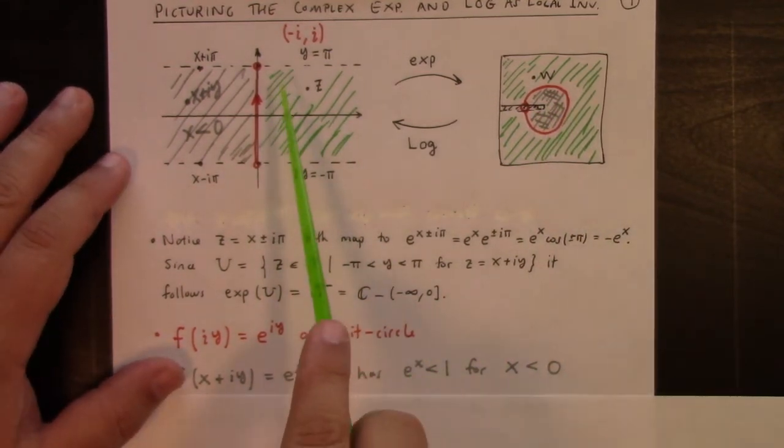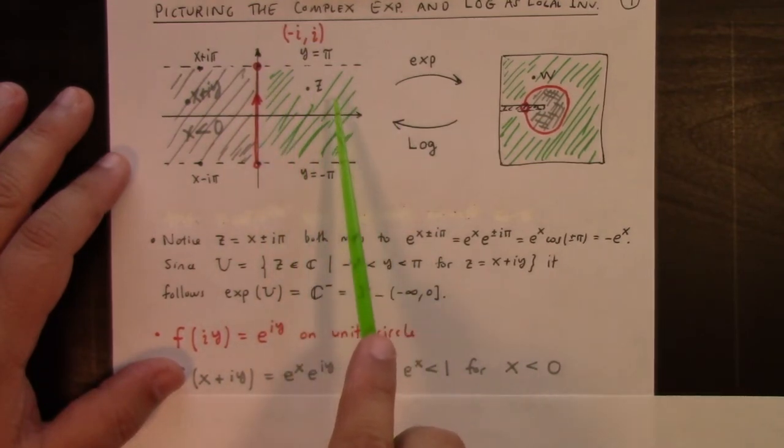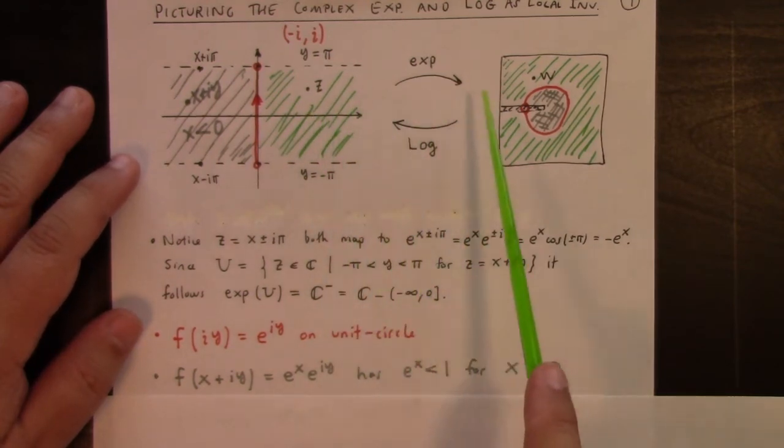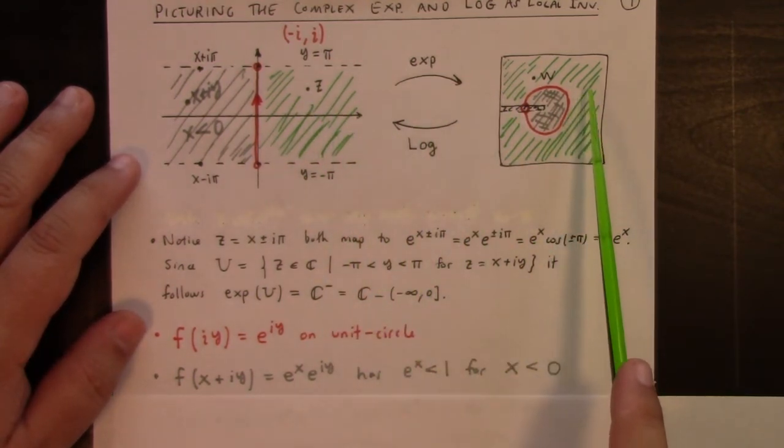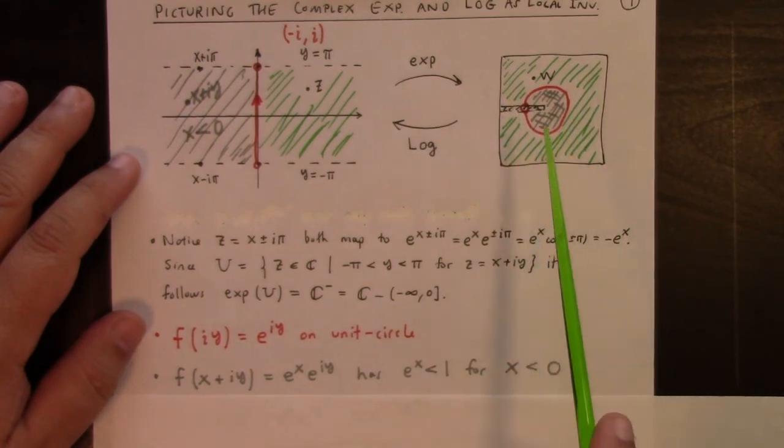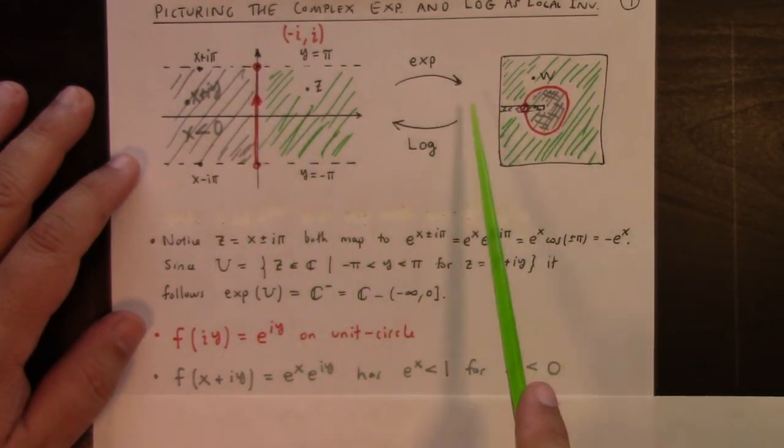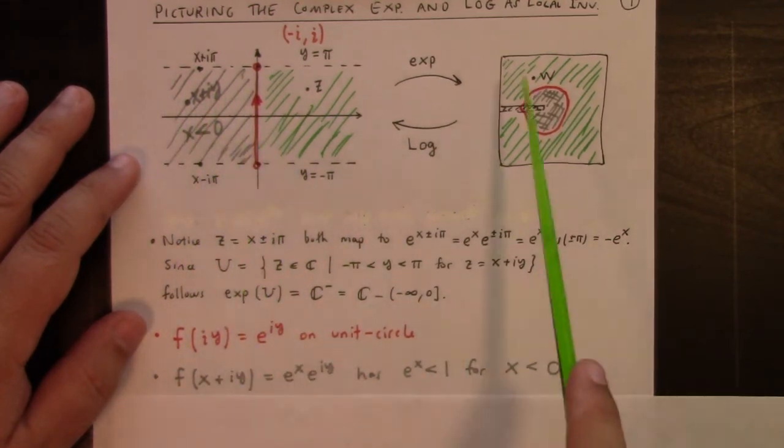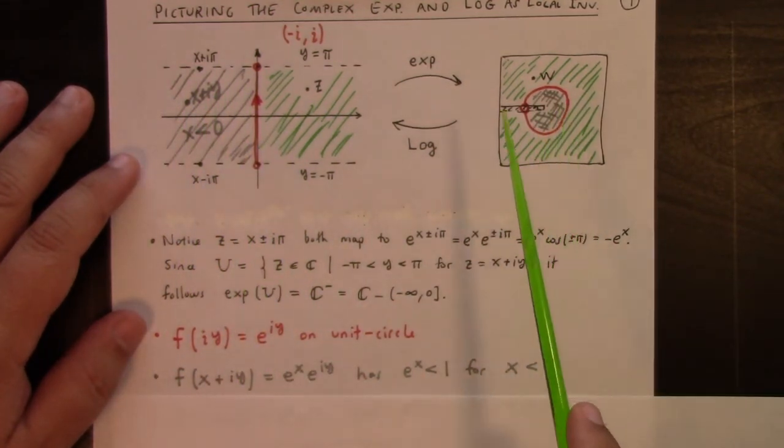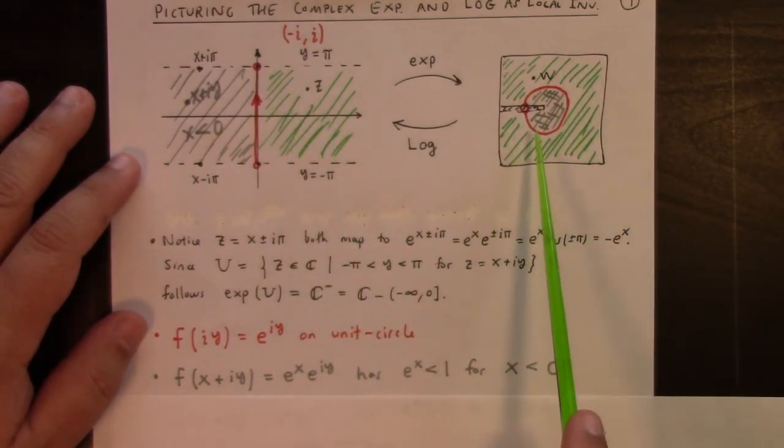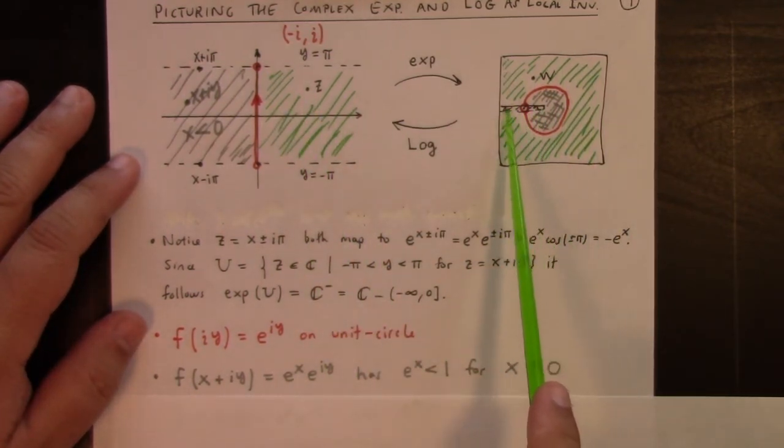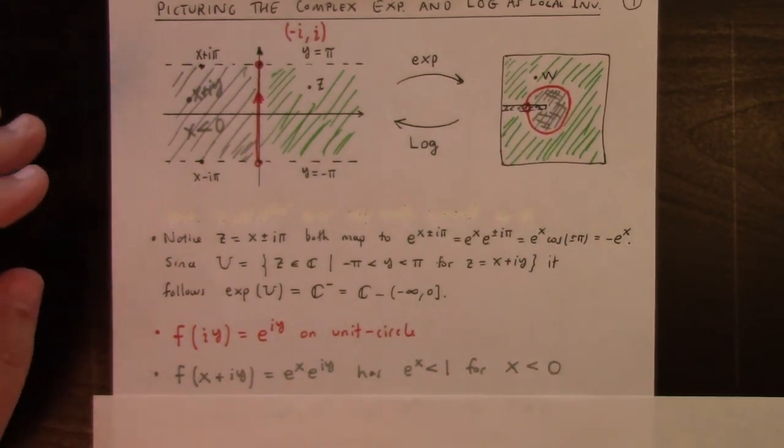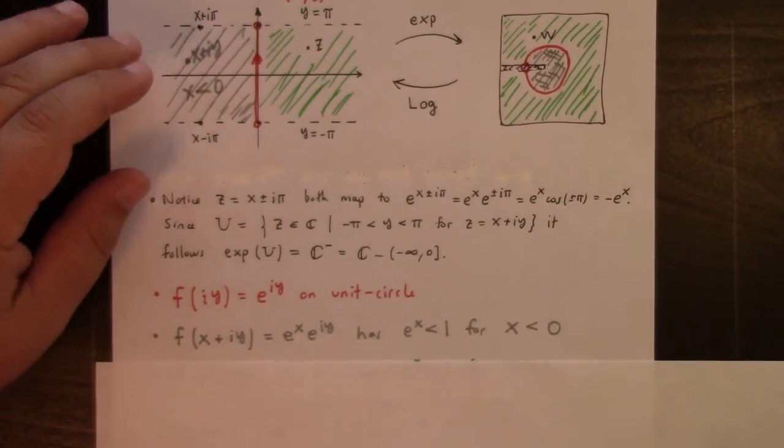On the other hand, if we're looking at this half of the infinite strip with positive x, that's giving us, that's mapping to points with radius larger than 1, so points outside the unit circle. We map the whole half of the infinite horizontal strip with negative x maps to the interior of the unit circle. Everything else out here maps to the exterior of the unit circle. We've deleted this strip in the interest of having a continuous local inverse.